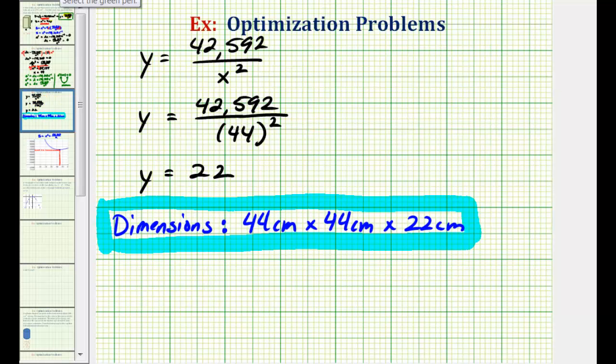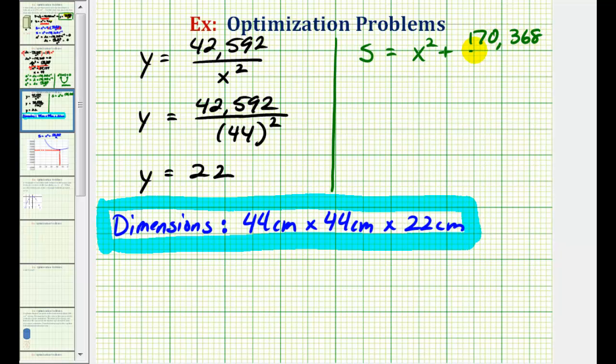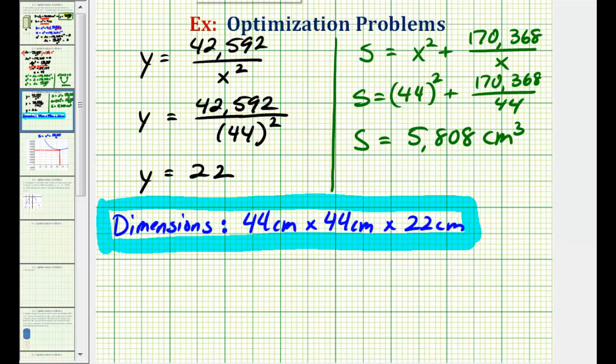We weren't actually asked to find this, but the surface area of that box would be equal to x squared plus 170,368 divided by x. So if x is equal to 44, this value comes out to 5,808 cubic centimeters, which again is verified by our graph.